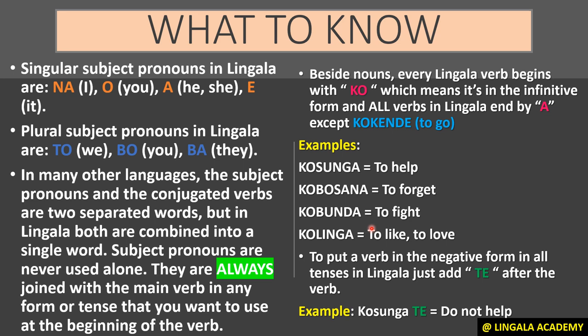The last thing I want you to know is how to put a verb in the negative form in all tenses in Lingala — it's very easy. You just need to add 't' after the verb. For example, the affirmative form of 'to help' is 'kosunga'. If we want the negative form, we add 't' at the end — that means 'do not help'. Same with 'to like': add 't' and that means 'do not like'. This works with any verb.